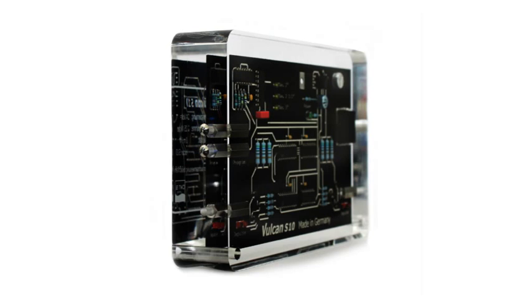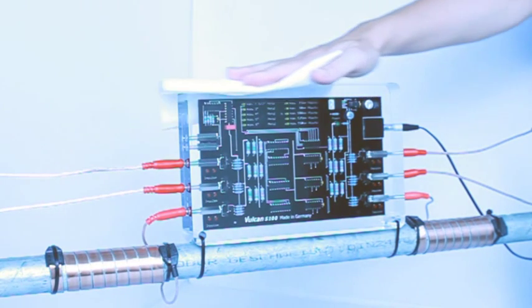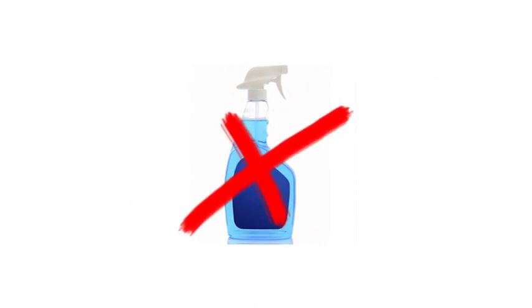The Vulcan block is made of acrylic. Please clean it only with water and a cloth. Do not use detergents such as Windex or glass cleaners.